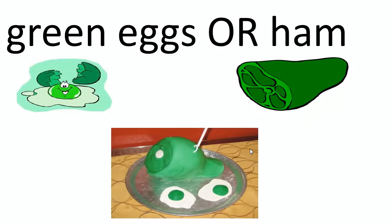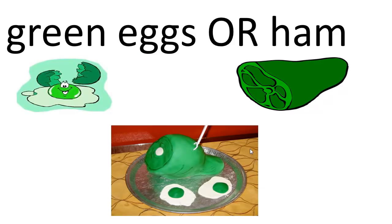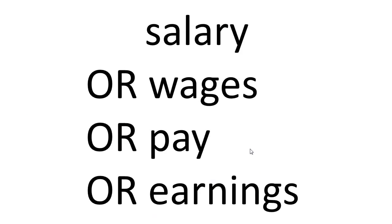Green eggs OR ham is going to pull up green eggs without ham, ham without green eggs, and green eggs with ham. When you put OR between two words, you're basically saying find at least one of these terms — you can find both, but at least one. So OR works well between words that mean almost the same thing, like salary, wages, pay, or earnings.